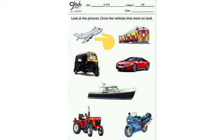Now which vehicle is this? This is an aeroplane. And does aeroplane move on land? No. So we will not circle it. Now which vehicle is this? This is a train. And train moves on land. So we will circle it.